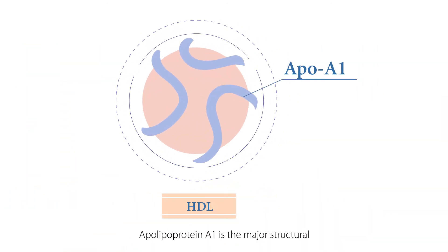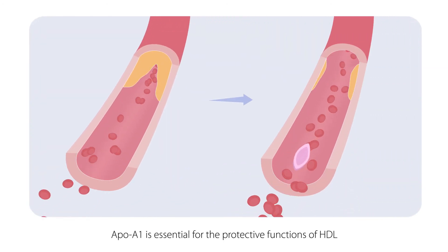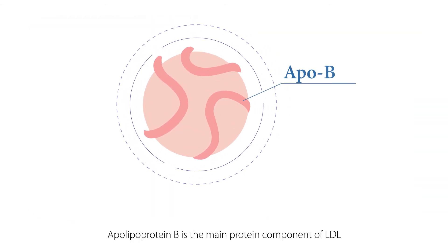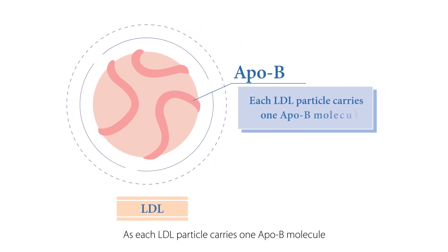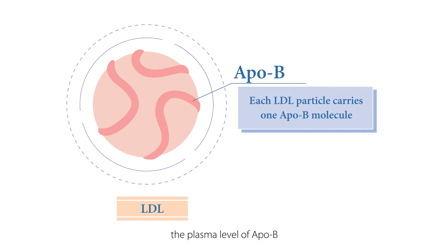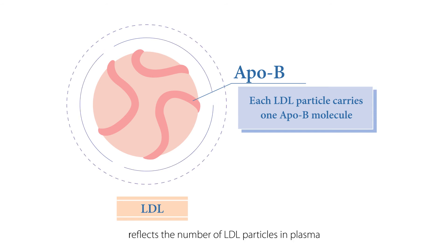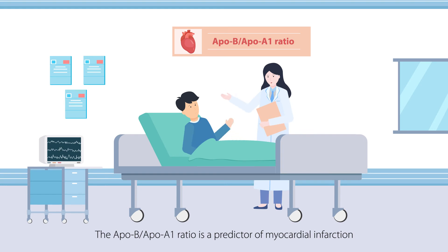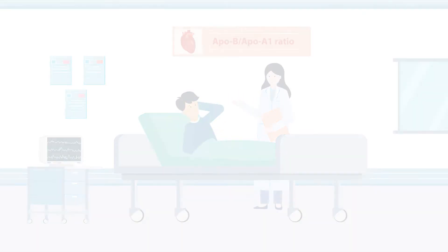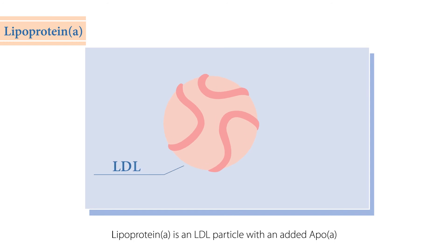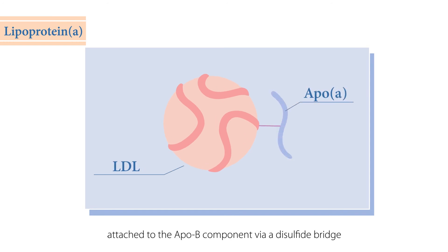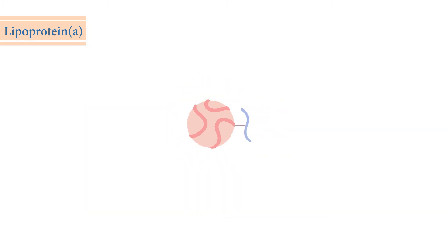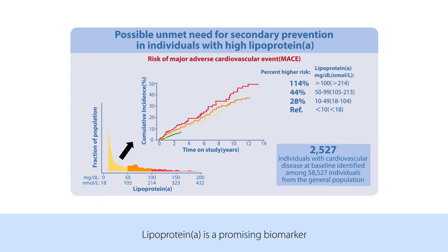Apolipoprotein A1 is the major structural and functional protein in HDL. ApoA1 is essential for the atheroprotective functions of HDL. Apolipoprotein B is the main protein component of LDL. As each LDL particle carries one ApoB molecule, the plasma level of ApoB reflects the number of LDL particles in plasma. The ApoB-to-ApoA1 ratio is a predictor of myocardial infarction. Lipoprotein(a) is an LDL particle with an added ApoA attached to the ApoB component via a disulfide bridge, and is a promising biomarker to help refine current strategies of ASCVD risk assessment.